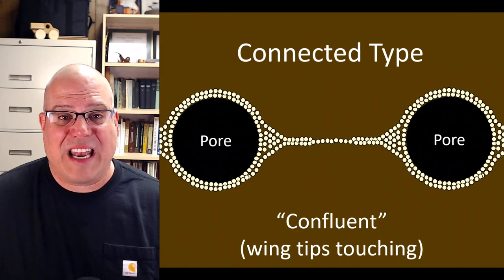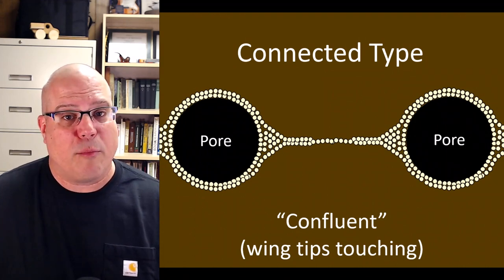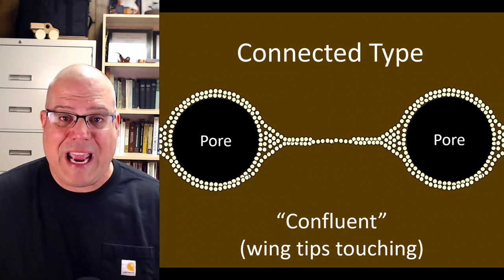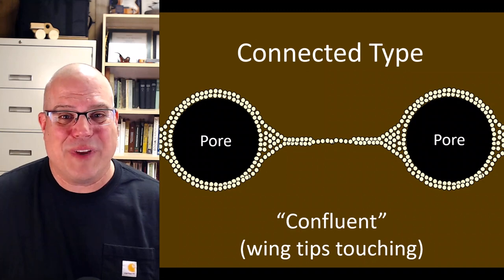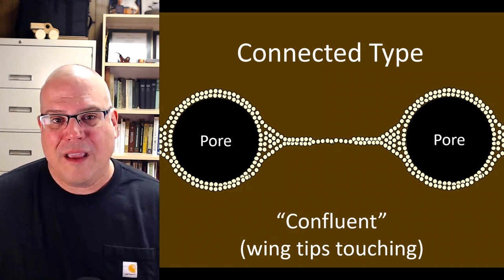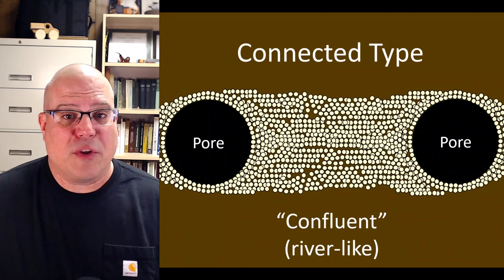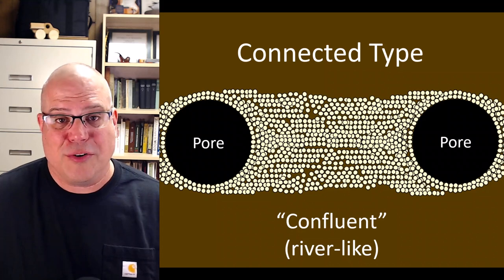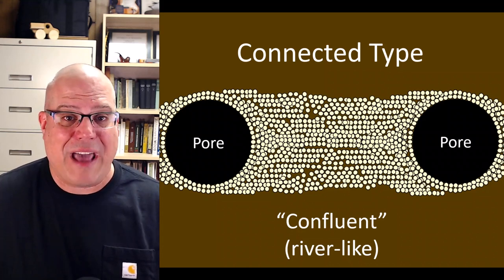Finally, let's move on to the connected type, where the parenchyma cells projecting from one pore connect with the parenchyma cells projecting from a neighboring pore. We call this confluent parenchyma. There is some variation here too: one image shows two pores connected by a thin stream of parenchyma, as if the tips of their wings were touching, while in another image the parenchyma cells are so numerous they form what looks like a wide river of like-colored tissue. In either case, we call this pattern confluent.